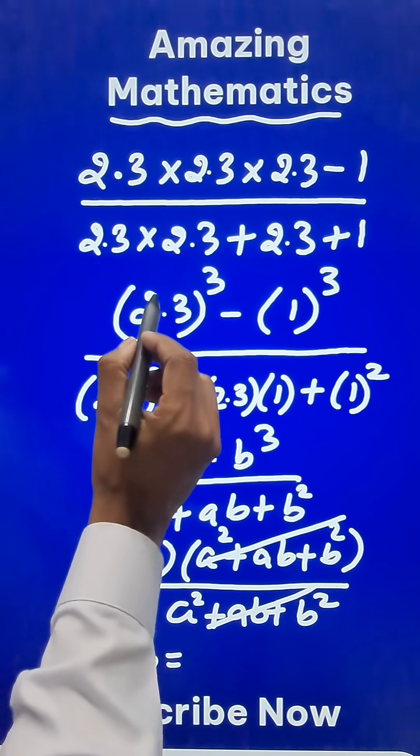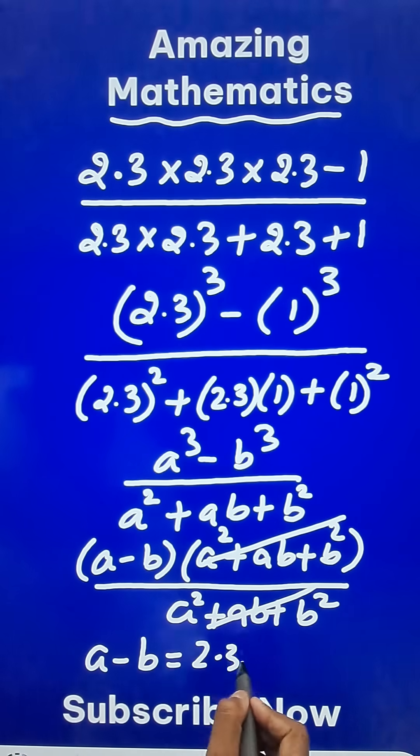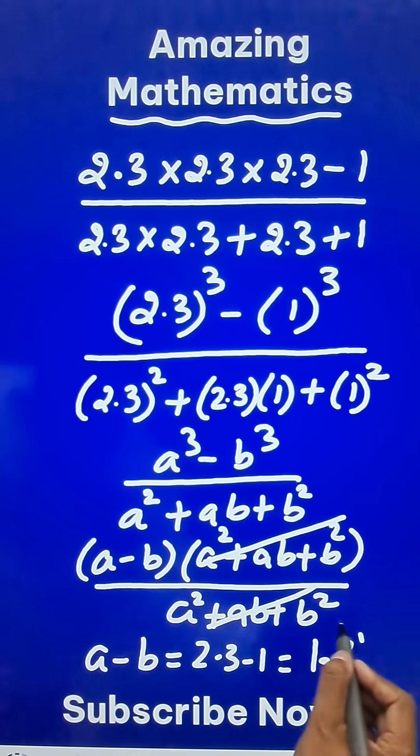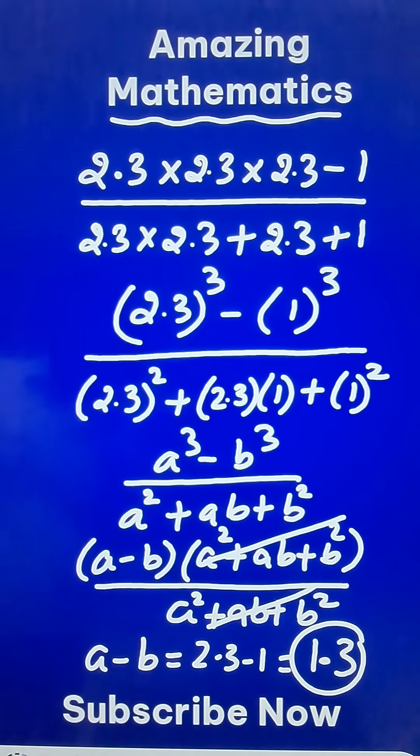So what will be the answer for this problem? 2.3 minus 1, and that is 1.3, which is the answer for this particular question.